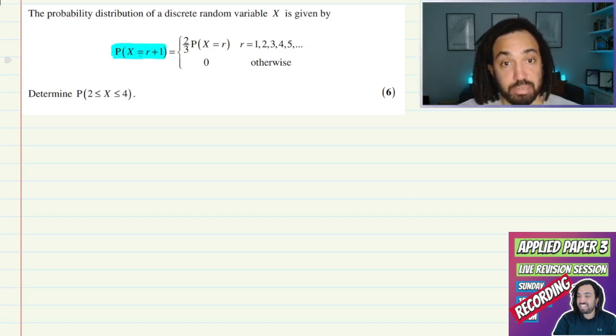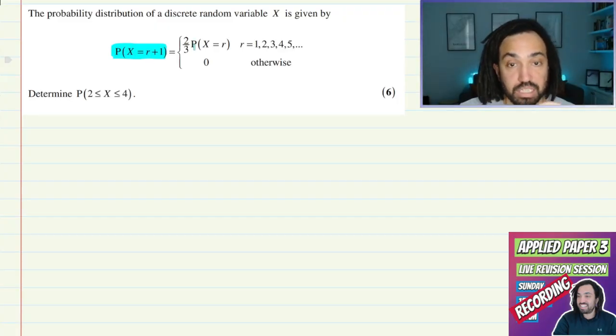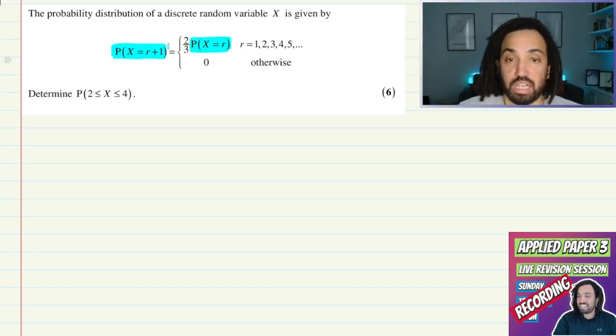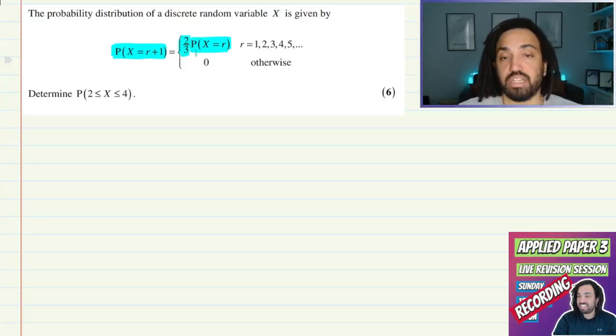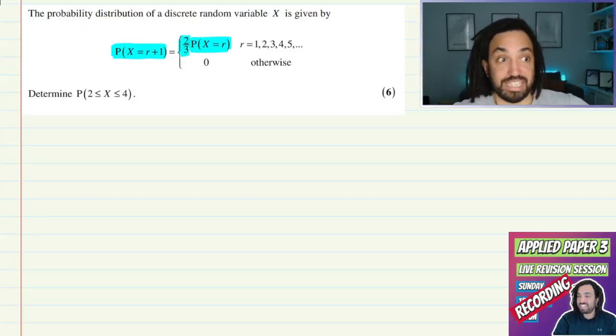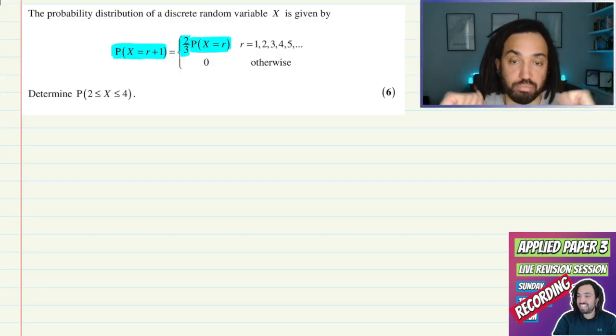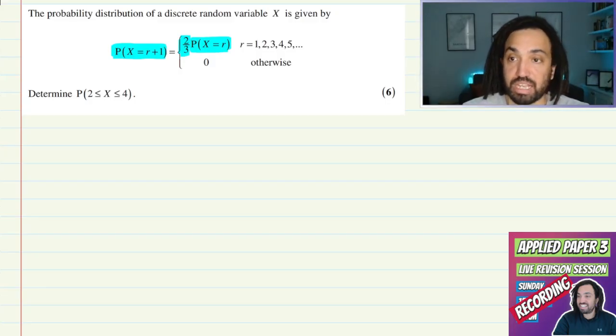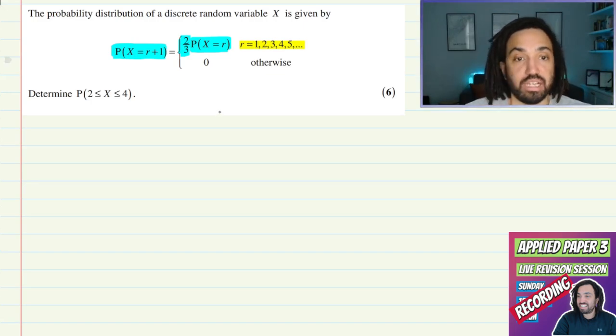In fact it's two thirds of that. So what that means is that the next probability along is two thirds the previous probability, and that is going to be the case for all r from 1 all the way up until, well, infinity.